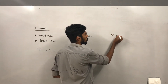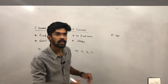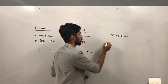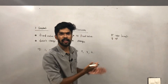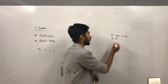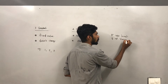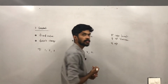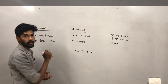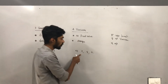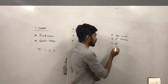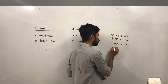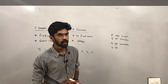Let's look at some examples. Five — what is five? Five is a constant. What about y? y is a variable. What about x? x is a variable, it changes. What about 2? 2 is a constant because it has a fixed value.